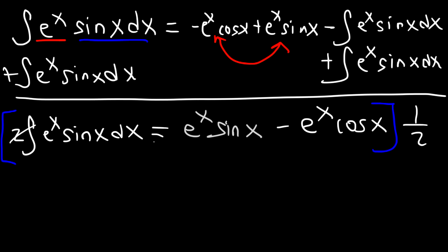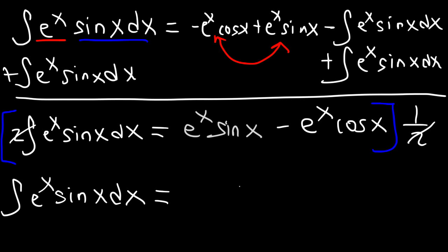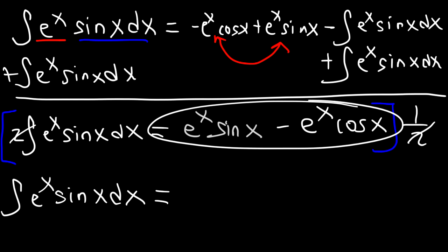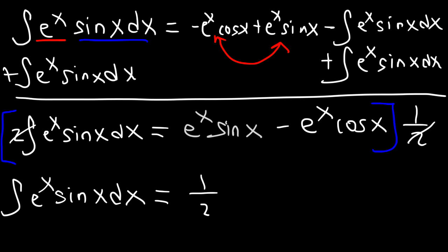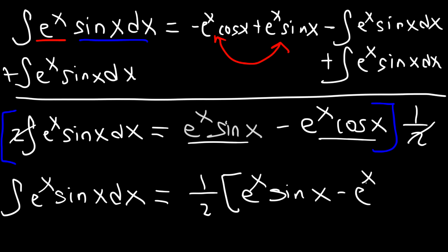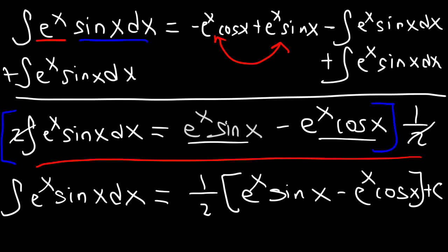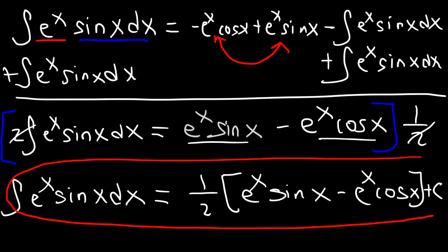On the left, we have the integral of e to the x sine x dx. And then multiplying the right-hand terms by one half, I'll put the half in front and enclose those two terms in a bracket: one half times e to the x sine x minus e to the x cosine x, plus C. And so this is the answer — the integral of e to the x sine x dx.